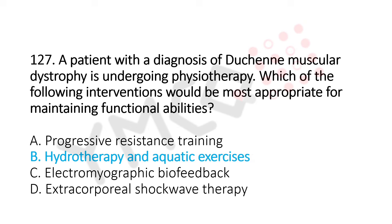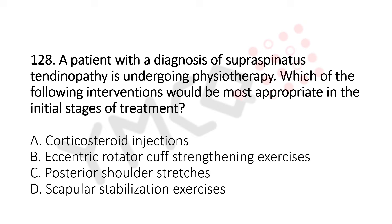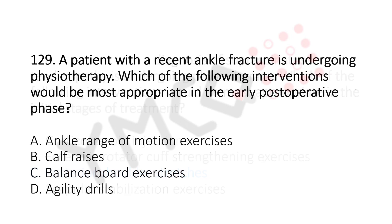Now let's move to question number 128. A patient with a diagnosis of supraspinatus tendinopathy is undergoing physiotherapy. Which of the following interventions would be the most appropriate in initial stages of treatment? Option A: corticosteroid injection. Option B: eccentric rotator cuff strengthening exercises. Option C: posterior shoulder stretches. Option D: scapular stabilization exercises. The answer is option C: posterior shoulder stretches.